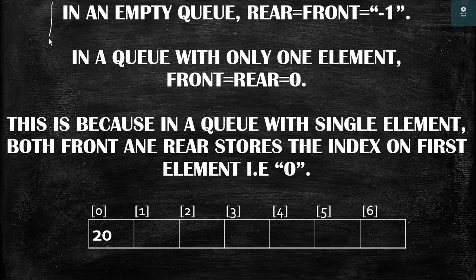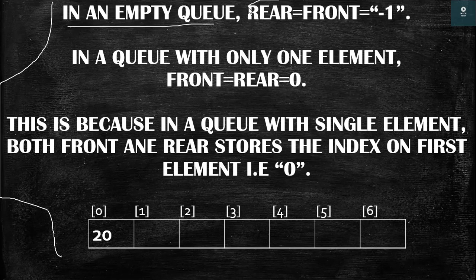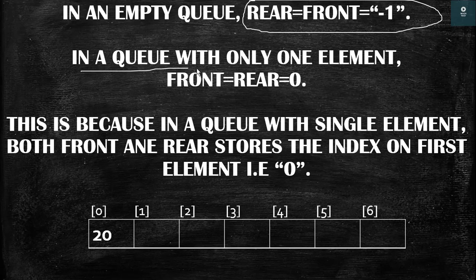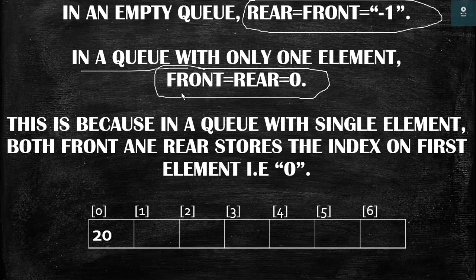These conditions are useful in the deletion of an element in a queue. In an empty queue we have rear equal to front equal to minus 1 — both are minus 1, and this condition will be used in the program. In a queue with only one element, suppose there is only one element, then we have front equal to rear equal to 0, because the element will be at 0th index.